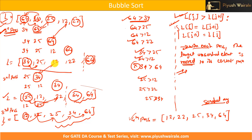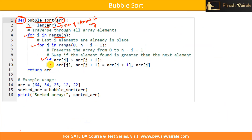If that condition is true, we swap the elements — same thing checked here. If 34 is greater than 12 we swap. So if the element at j-th position is greater than the element at j plus 1, we swap them; otherwise we go to the next iteration.